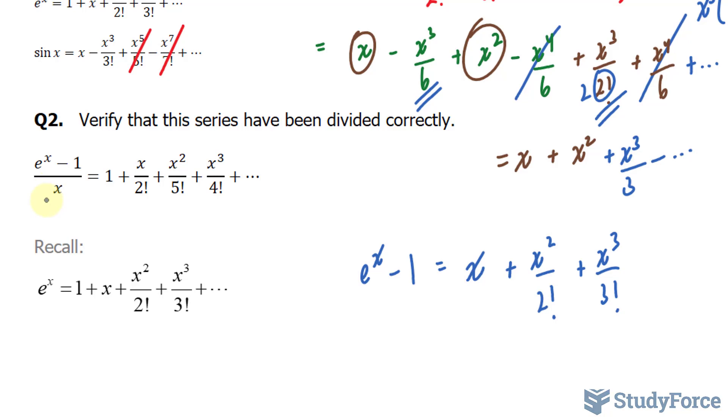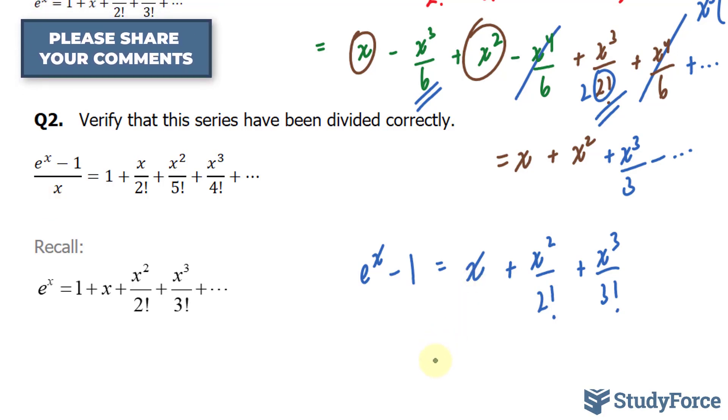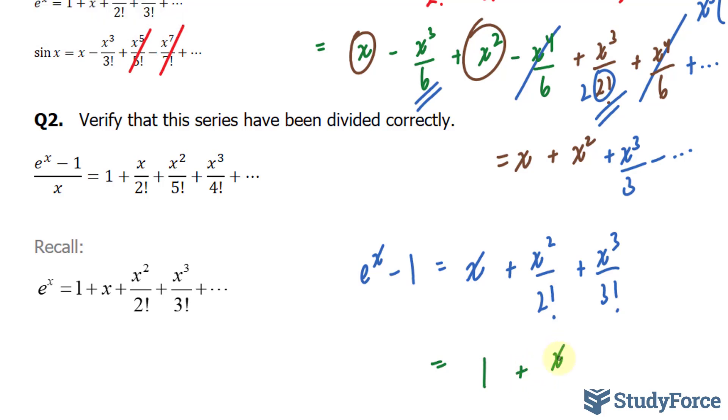And then we have over x. This means that I'll divide each of these terms by x. Let's see what happens if we do that. If I divide this by x, I end up with 1. Dividing this by x gives me x over 2. Dividing this term by x gives us x to the power of 2 over 3 factorial, which is 6. I'll just leave it as 3 factorial.